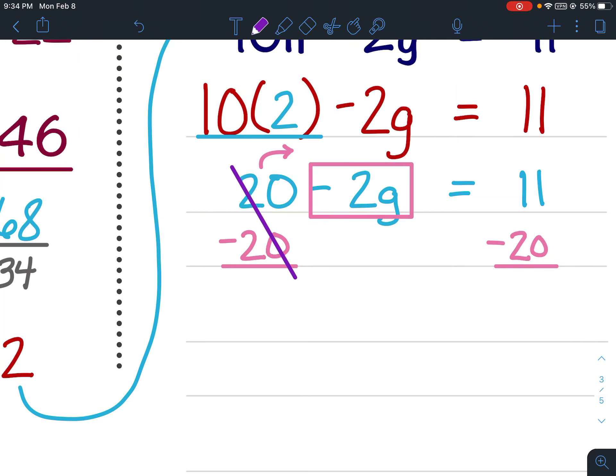The 20s would cancel. Bring down my negative 2g. Bring down the equal signs. 11 minus 20 is negative 9.